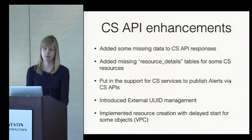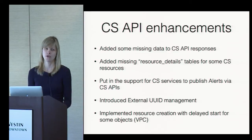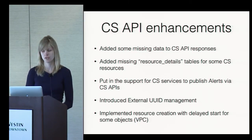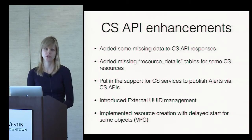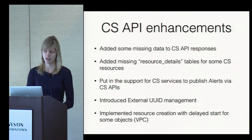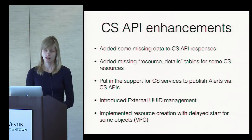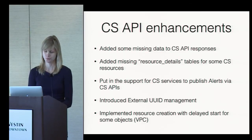Overall, it's been a pretty easy experience writing on top of cloud stack, especially considering all the architectural enhancements done during the past two years. But there were certain things I had to fix on the cloud stack API side. Some data was missing in API responses, like user data — you were able to set it using the API but couldn't retrieve it. Some resource details tables were missing for certain cloud stack resources, so I added them. There was no way for cloud stack services to publish alerts through the APIs, so I added an API for that. And there was no way to manage the external UID — the UID was something cloud stack set for you, with no way to provide it during VM deployment — so we enabled that.